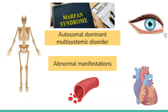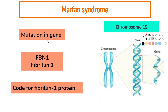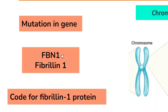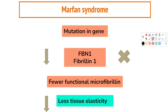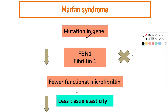Marfan syndrome is an autosomal dominant multi-system disorder characterized by abnormal manifestations in the skeletal, cardiovascular, as well as ocular systems. It is caused by a mutation in a gene called FBN1 or fibrillin-1 on chromosome 15, which codes for fibrillin-1 protein. Due to this gene mutation, fibrillin is either non-functioning or not present in enough quantity, leading to fewer functional microfibrils and less tissue elasticity.